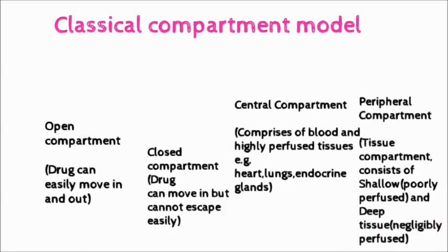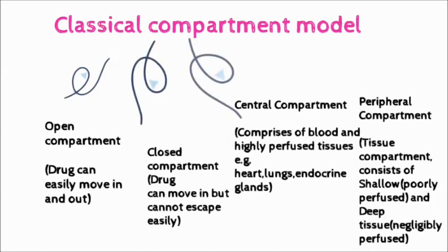Number four is Peripheral Compartment, Peripheral or Tissue Compartment. It is further divided into two types that is Shallow Tissue and Deep Tissue. Shallow, Poorly Perfused and Deep tissues, Negligibly Perfused.